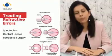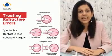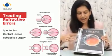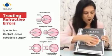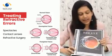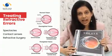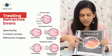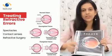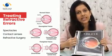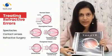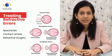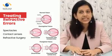In myopia, if we place a concave lens in front of the eye, it would diverge the rays of light such that they focus on the retina. Similarly, in a hypermetropic eye, a convex lens placed in front of the eye converges the rays so they focus on the retina. The most common way to place these lenses is using spectacles — the safest, easiest, and most convenient method to correct a refractive error.